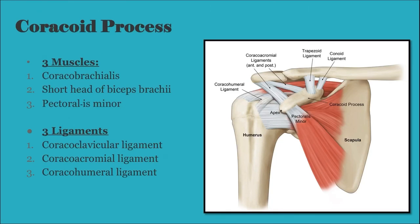One last look at the coracoid process: the muscle attachments are the coracobrachialis and the short head of biceps brachii from the tip, and the pectoralis minor from the medial border.